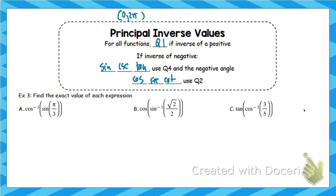The last thing we're going to do is find compositions — questions within questions. These help you understand the difference between an inverse and finding a regular trig value. Start with the innermost parentheses. Sine of pi/3: find pi/3 on the unit circle and write the y-coordinate, which is root 3 over 2. Now the question becomes cosine inverse of root 3 over 2: at what angle is the x-coordinate root 3 over 2? Since we're finding the principal value, that one answer is pi over 6.